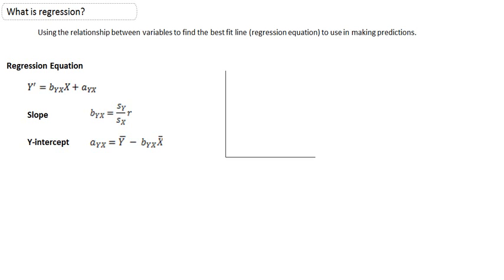Now, you can see the regression equation or the basic form that we have for that. We have y prime, or the predicted value of y, will be equal to byx, which is actually the slope, times x, which is the value we'll plug in to predict y,